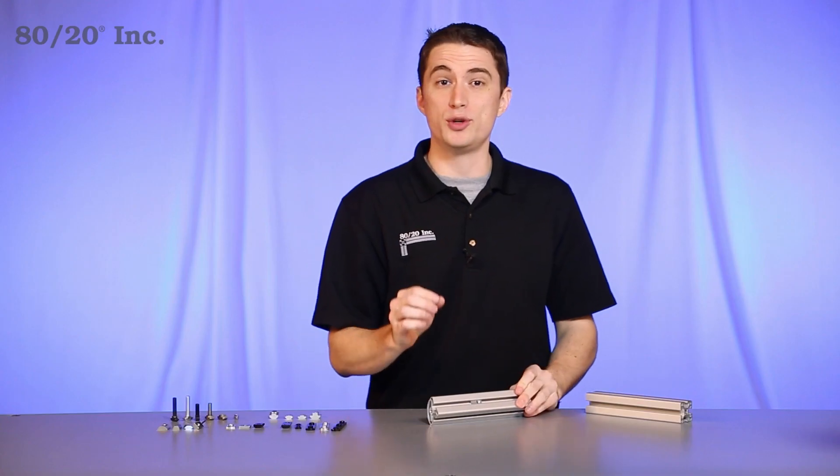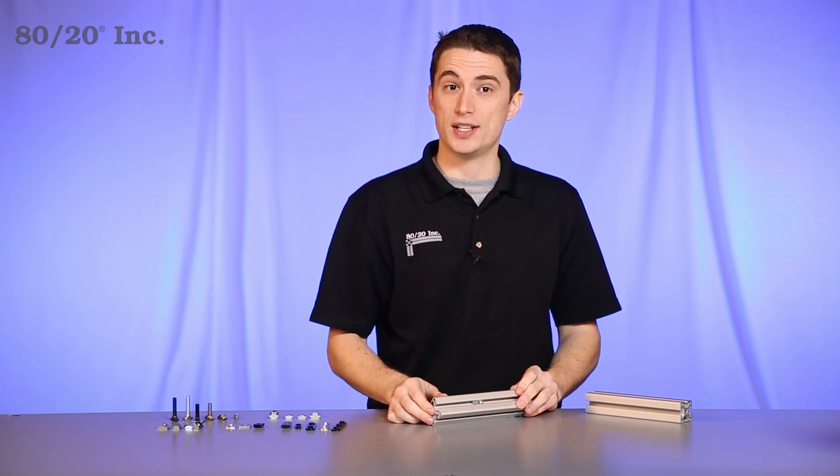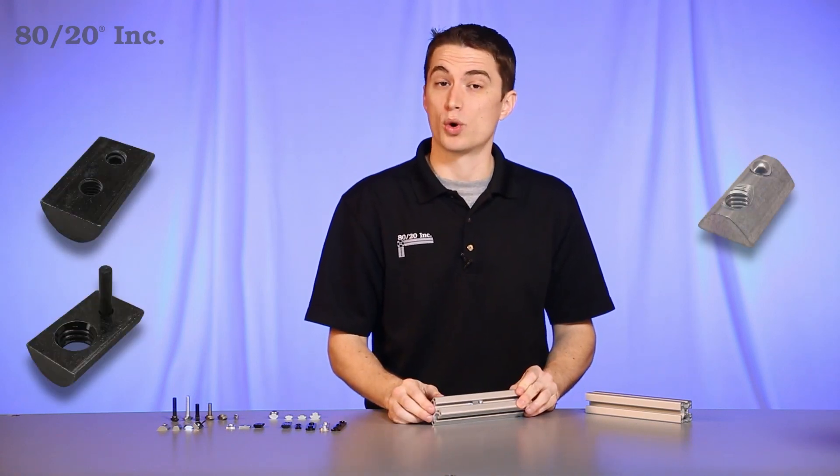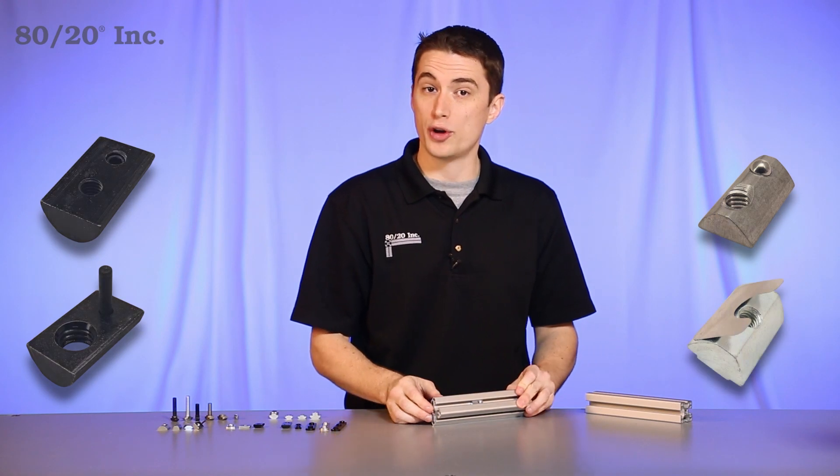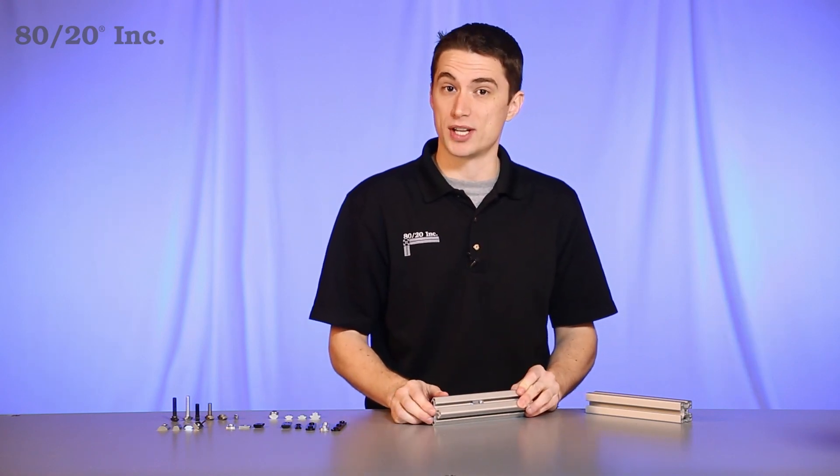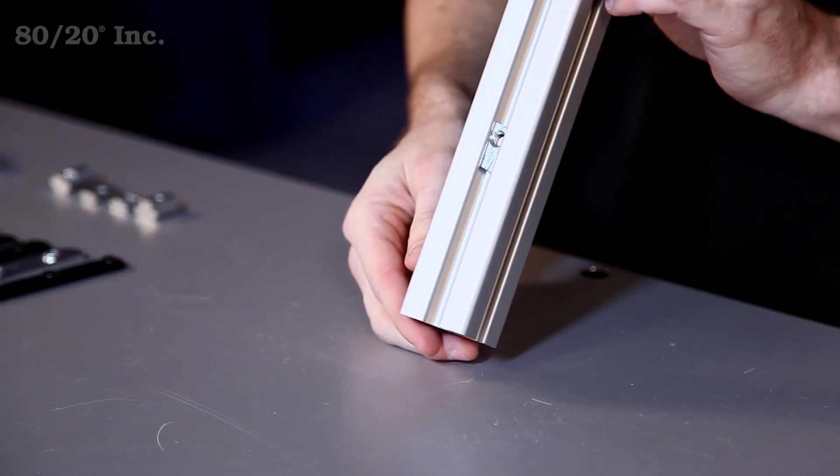When we're using this, we have a few different options. We have T-nuts with a set screw, a flex handle, a ball spring, or a spring leaf. Although all these look different, they all serve the same purpose and that is to hold themselves into place despite the orientation of the bar.